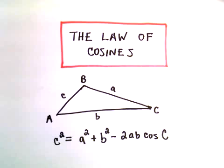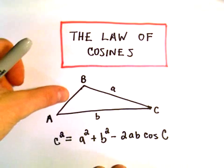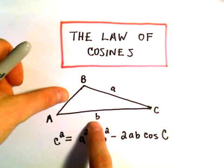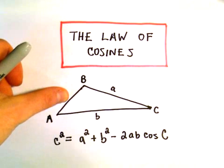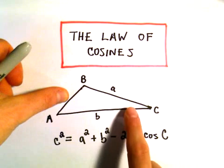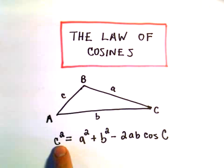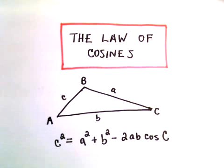Basically the idea is, suppose we didn't know C here, suppose we knew A and B, but suppose we also knew the angle in between them, the angle C. We can figure out the side C by using the formula C squared equals A squared plus B squared minus 2AB cosine C.